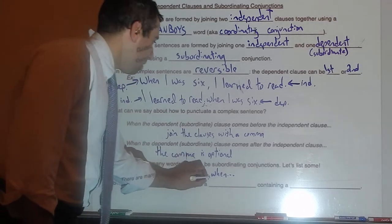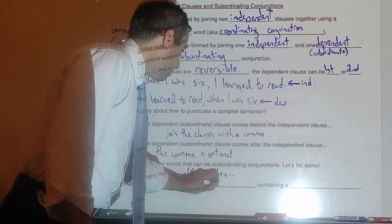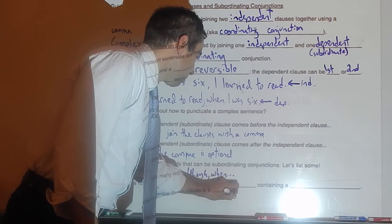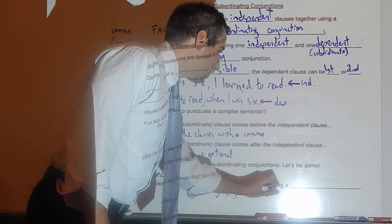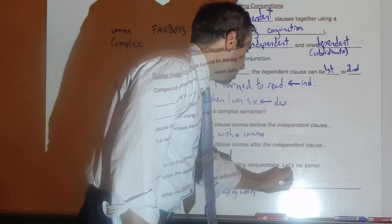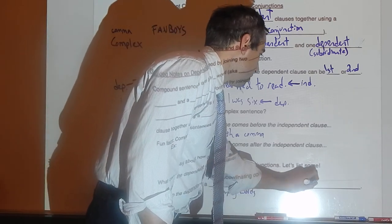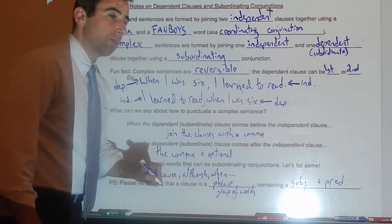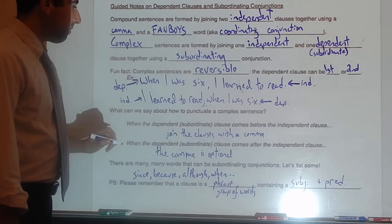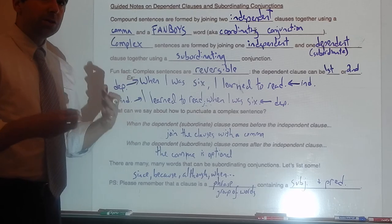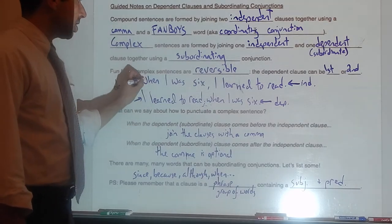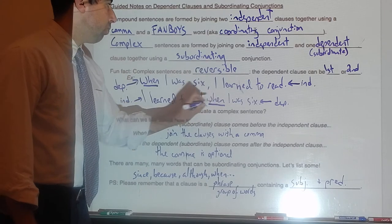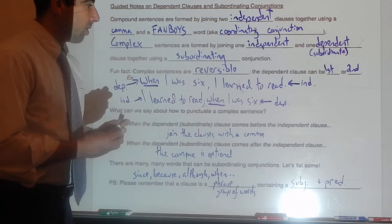Please remember that a clause is a phrase or group of words containing a subject and a predicate. In case you're having trouble identifying subordinating conjunctions, in the example sentences the subordinating conjunction is 'when' — in both the first and second version of the sentence.